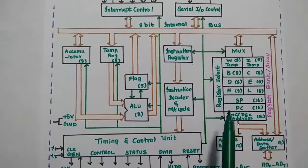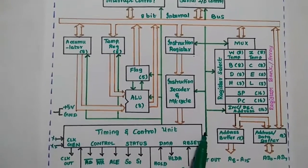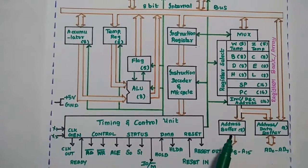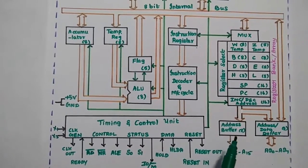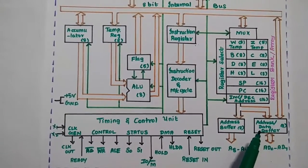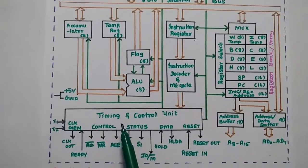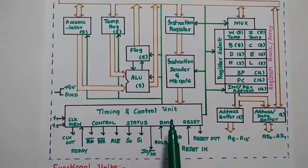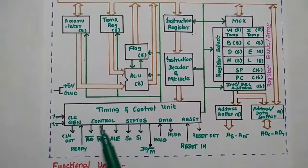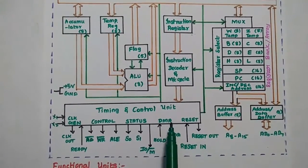The address buffer and address-data buffer are temporary storage areas for address lines, where multiplexed address and data lines are stored. The next important part is the timing and control unit, which has clock signals, control signals, status signals, and direct memory access signals.